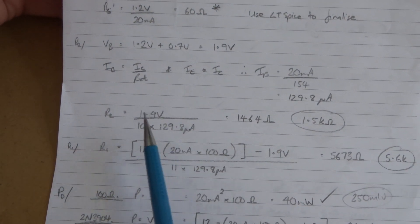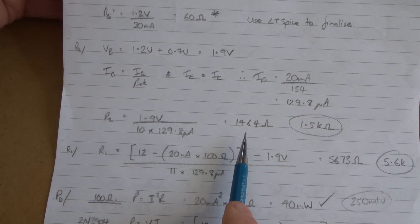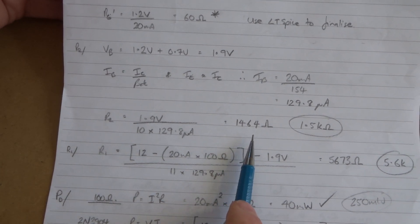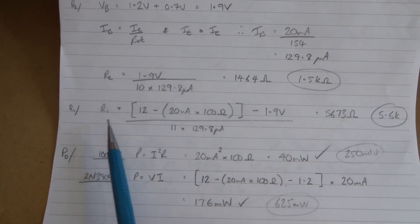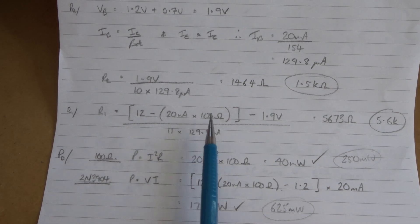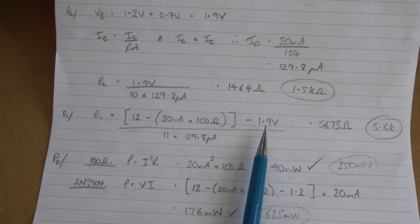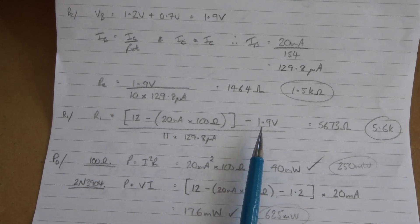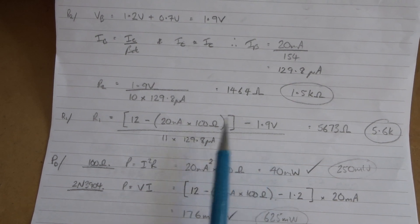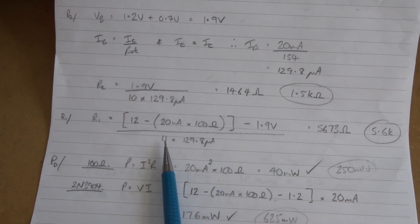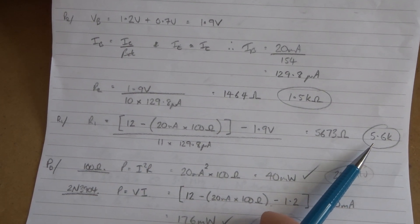Using Ohm's law to work out R2 comes out at 1464, and I'm going to use a 1.5k ohm resistor. For R1, I've got 12 volts minus the voltage drop across that 100 ohm resistor minus the voltage at the base. It's 1.2 plus 0.7 equals 1.9 divided by 11 times the base current, comes out at 5673, so I'm going to use a 5.6k ohm resistor.